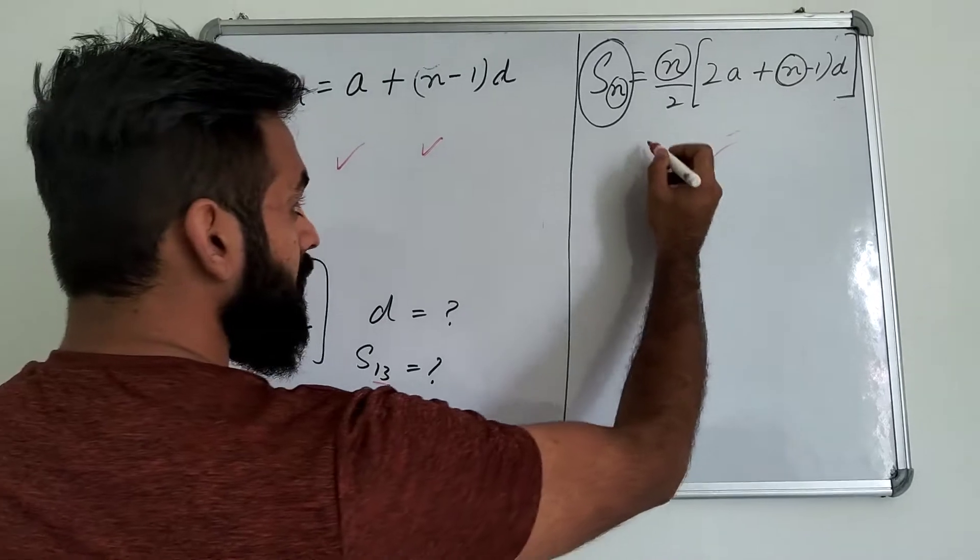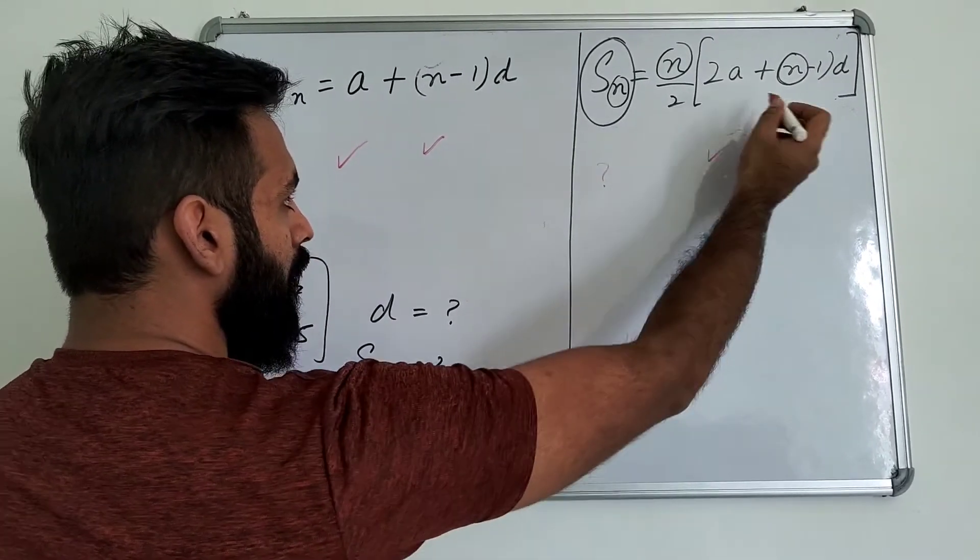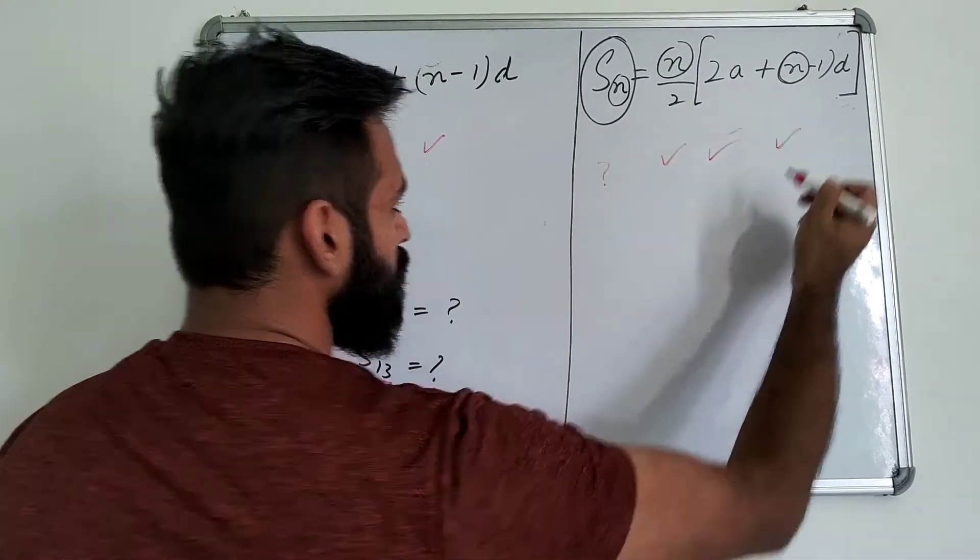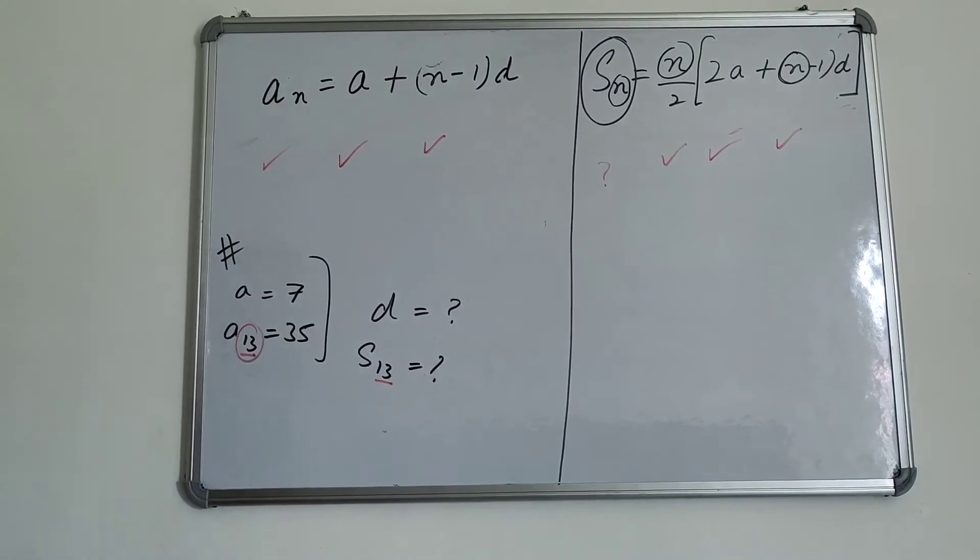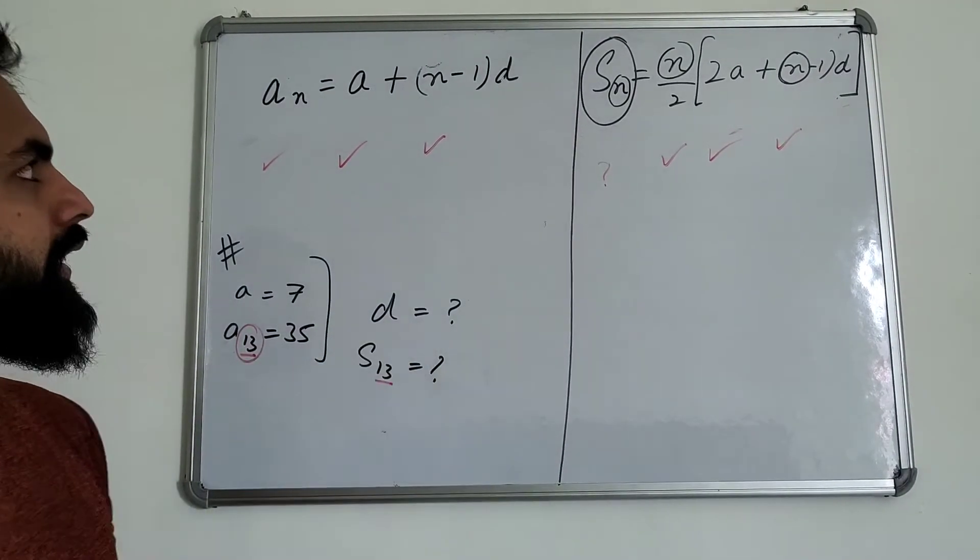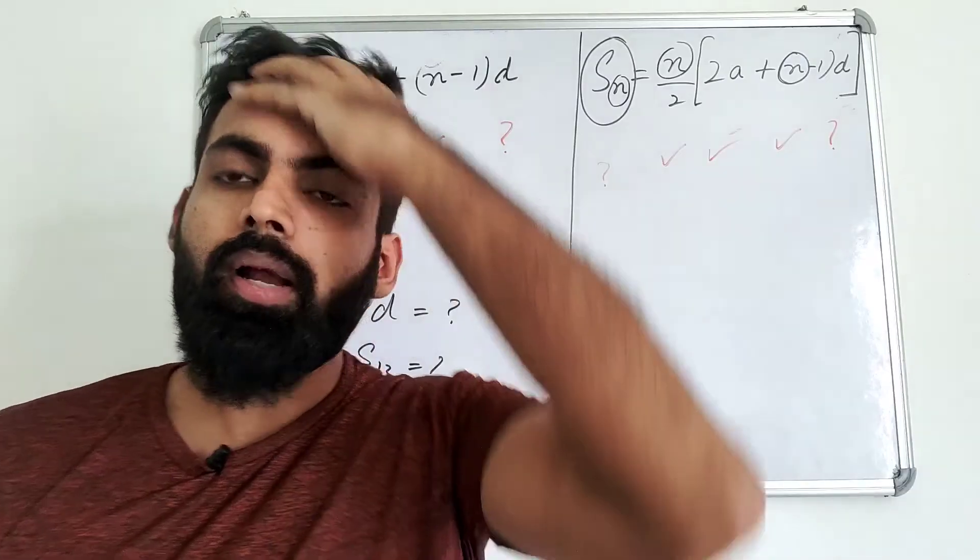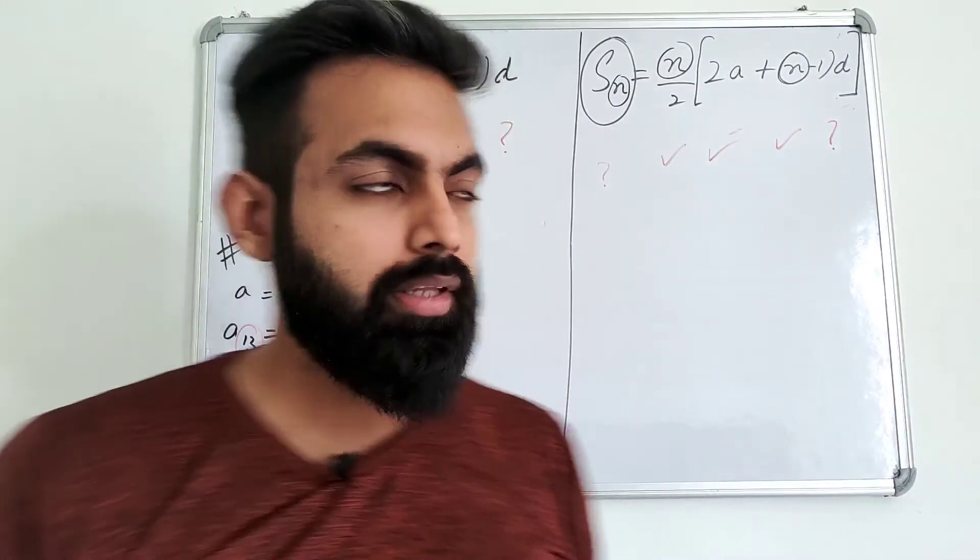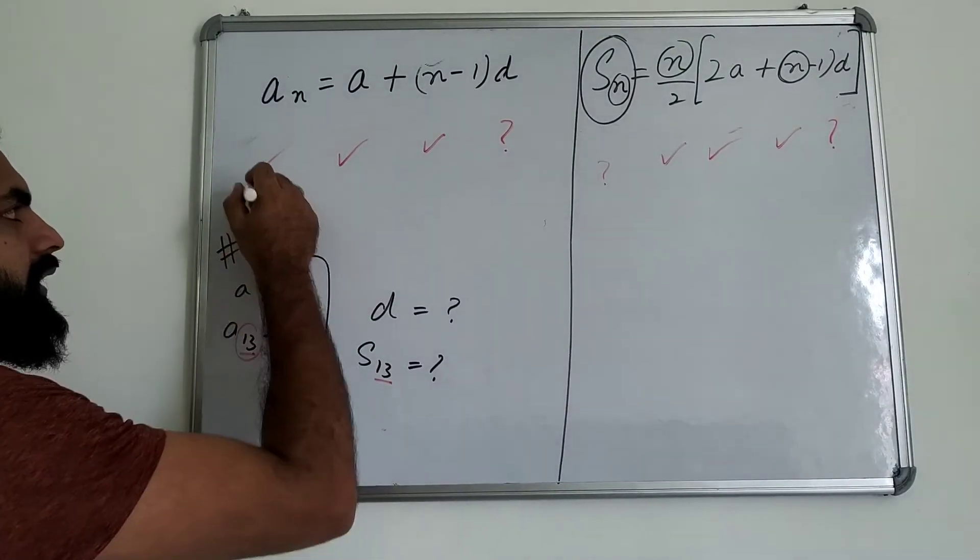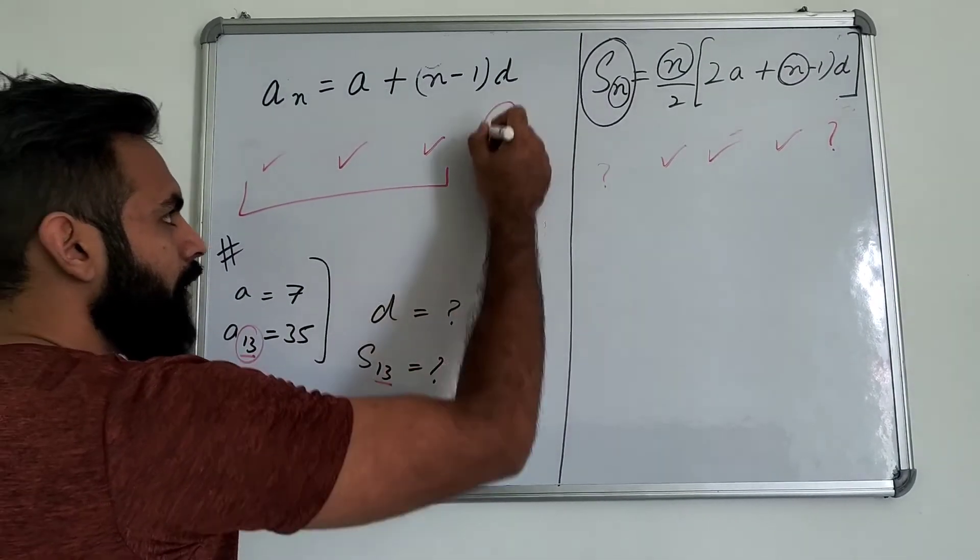If I put S13, this means that I have this question. And you have n value 13 given. So wherever n is, you will put 13. I think that you will know what is missing. One is missing. Here is d missing. But if you look at how many things are missing—in the first part you have 3 things given and only d missing.